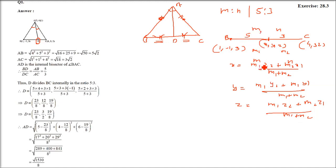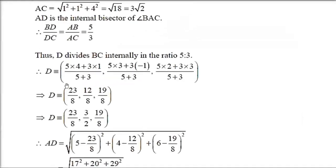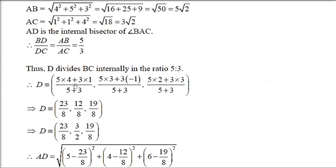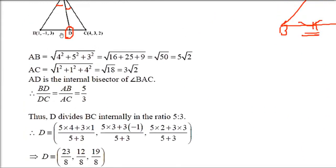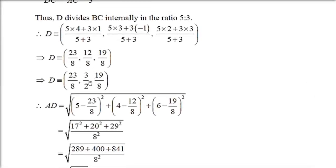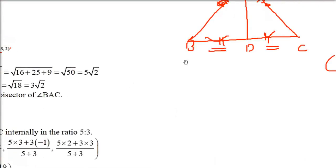M1 and M2 are known: 5 and 3. Point B is X1, Y1, Z1; point C is X2, Y2, Z2. Now just apply: 5 into 4 plus 3 into 1, divided by 5 plus 3 is your X coordinate. Then 5 into 3 plus 3 into minus 1, divided by 5 plus 3. Then 5 into 2 plus 3 into 3, divided by 5 plus 3. So the coordinates of D are known — this is the first part of the answer.